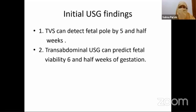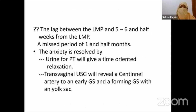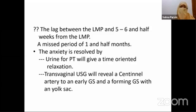There is a lag time between transabdominal and transvaginal ultrasound. If you want to answer a woman who has a missed period, using transvaginal ultrasound one week earlier is reassuring for both the patient and the clinician. The lag between the LMP and five to six and a half weeks means a missed period is about one and a half months. Anxiety is resolved first by a urine pregnancy test, and then transvaginal ultrasound will reveal a sentinel artery, an early gestational sac, and a formal gestation with a yolk sac.